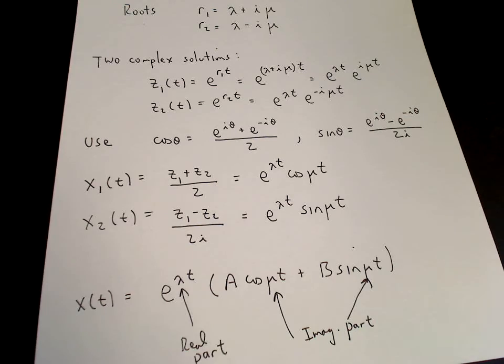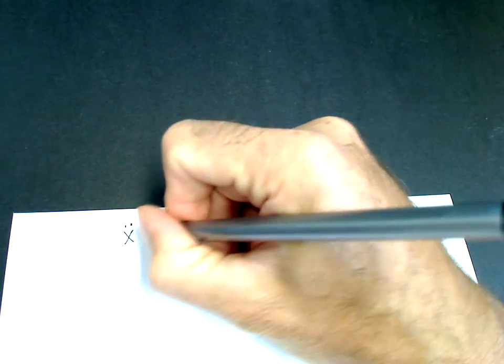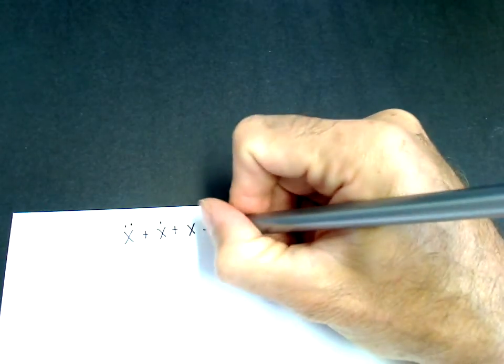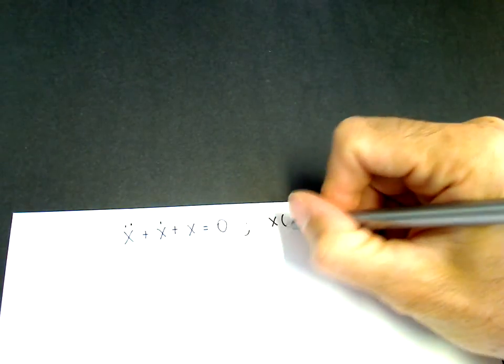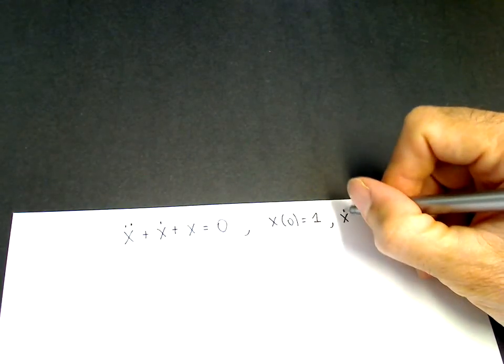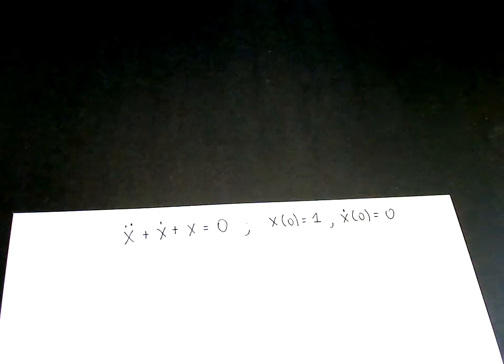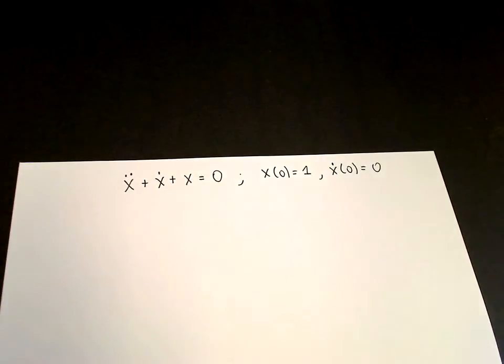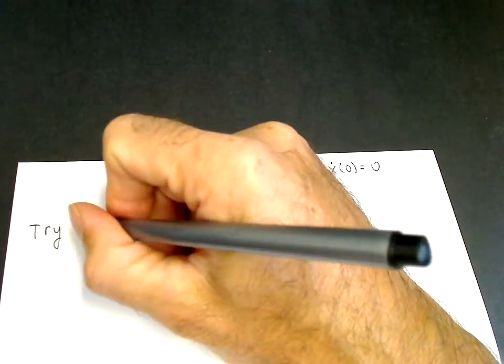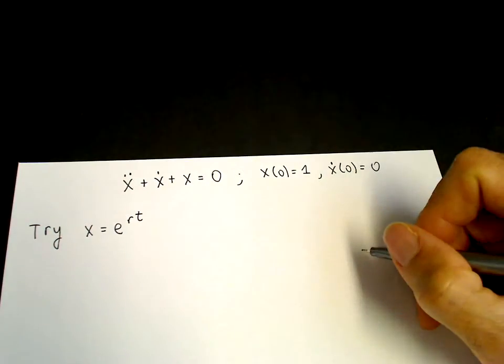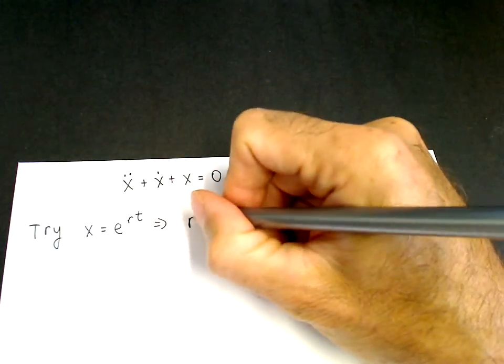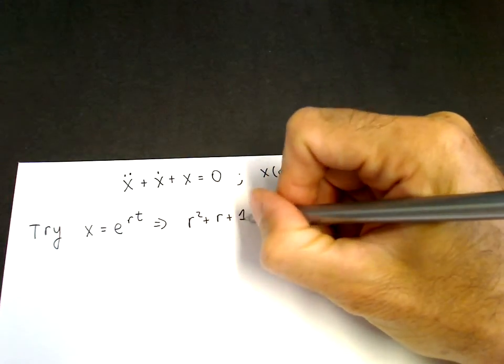Let's solve a specific differential equation to make sure we understand how it works. We will try x double dot plus x dot plus x equals zero, with initial conditions x(0) equals 1 and x dot of 0 equals 0. We don't know the roots of the characteristic equation yet, so we try x equals e to the rt, giving us r squared plus r plus 1 equals zero.